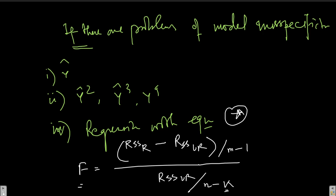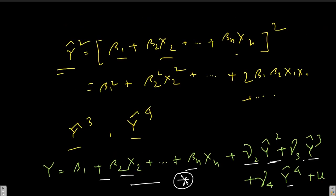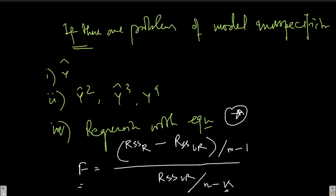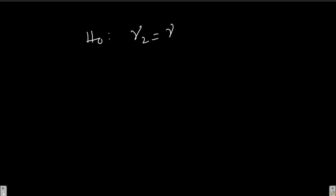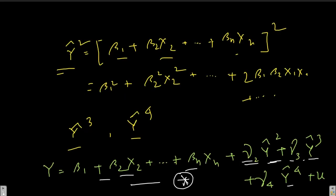The null hypothesis is that gamma2 = gamma3 = gamma4 = 0. If the gammas are zero, the higher-order ŷ terms have no significant contribution to explaining the model, which means my original model is correctly specified. If we take only ŷ² and not higher-order terms, then the null is just gamma2 = 0.